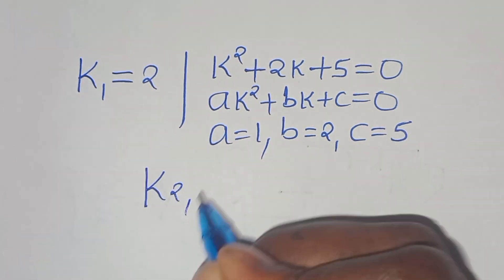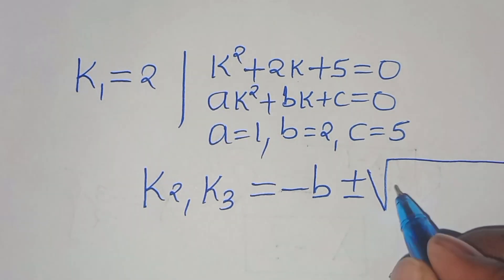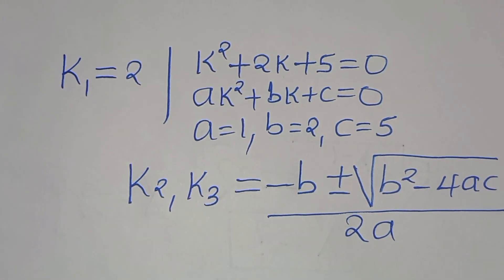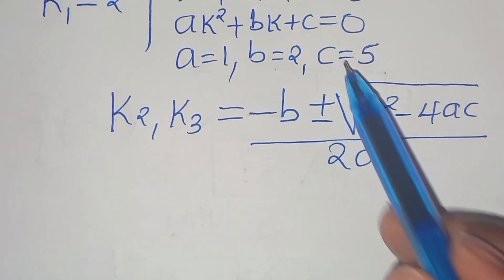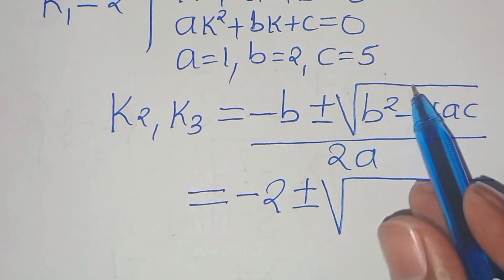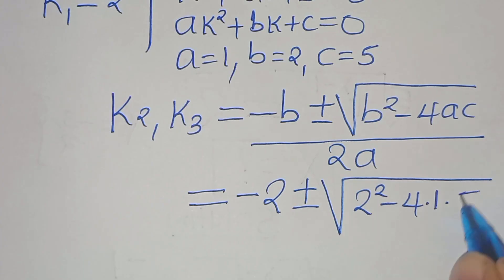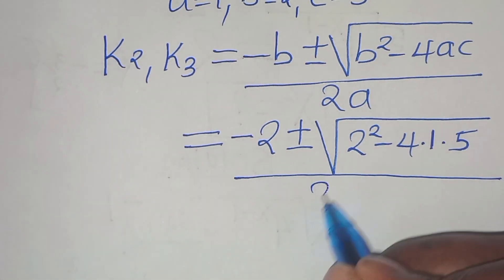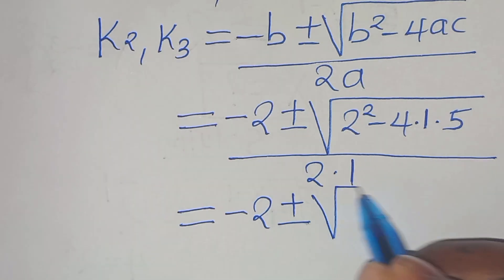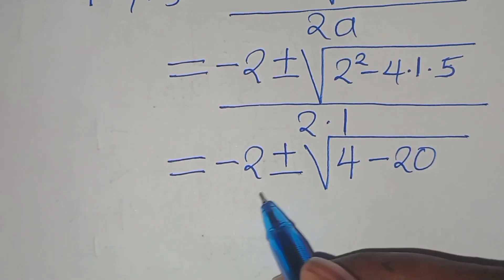For k2 and k3 we apply the quadratic formula, which is minus b plus or minus the square root of b squared minus 4ac, everything divided by 2 times a. Substituting the values: minus 2 plus or minus the square root of 2 squared minus 4 times 1 times 5, all divided by 2 times 1. So we have minus 2 plus or minus the square root of 4 minus 20, everything divided by 2.